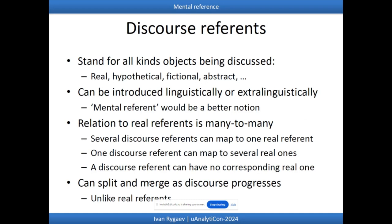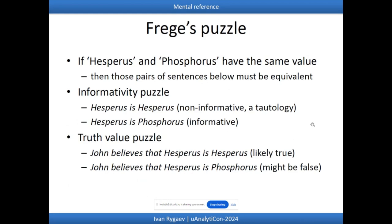A discourse referent can have no corresponding real one, as when we talk about hypothetical or fictional objects. Importantly, unlike real referents, discourse referents can split and merge as the discourse progresses and the state of mind is updated. Moving to the puzzles: the well-known Frege puzzle about Hesperus and Phosphorus — if those two terms have the same value, then those pairs of sentences must be equivalent. Hesperus is Hesperus is non-informative, a tautology, while Hesperus is Phosphorus seems to be informative.